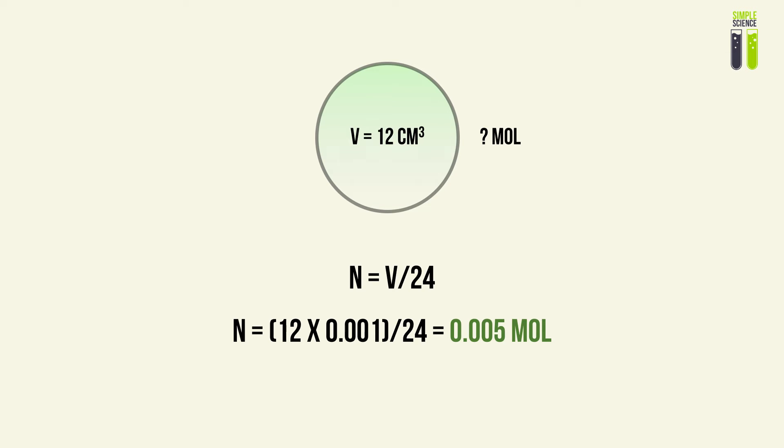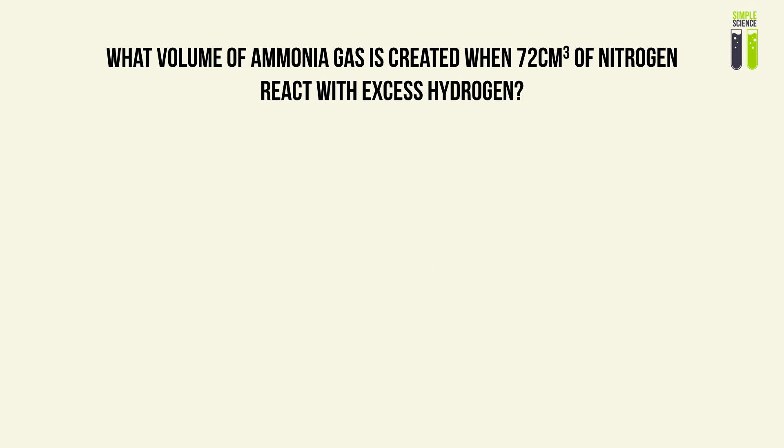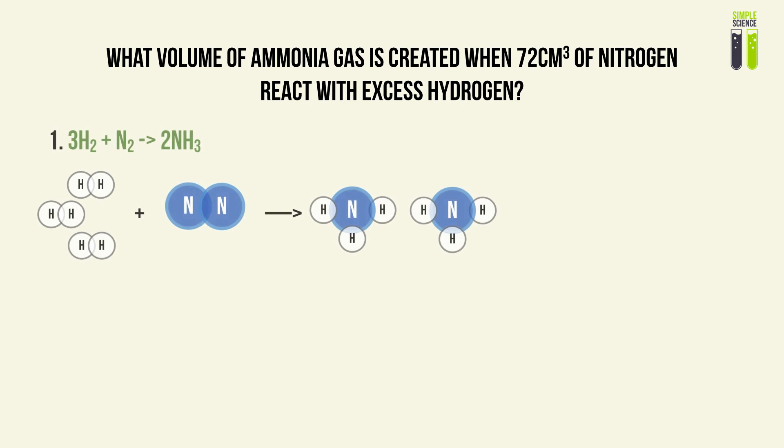A more common question would look like this: if we take a look at this reaction, what volume of ammonia gas is created when 72 cm³ of nitrogen gas reacts with excess hydrogen? This reaction is essentially the Haber process, whereby hydrogen reacts with nitrogen to produce ammonia — a very important industrial process.